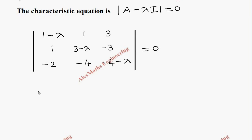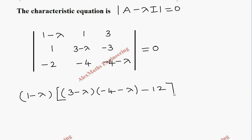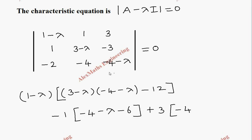I am going to expand this determinant along row 1. So 1 minus lambda, we multiply: 3 minus lambda into minus 4 minus lambda, minus the product of the other two which is 12. Then minus 1 times 1 into minus 4 minus lambda, minus 6. Then plus 3 times the product minus 4, and since there is already a minus 2, it becomes plus 2 into 3 minus lambda, which is equal to 0.